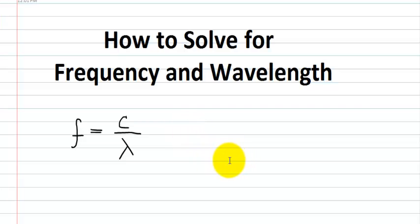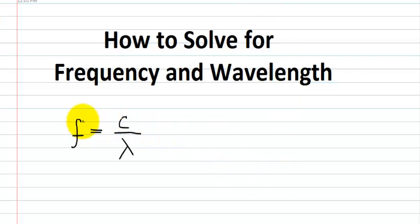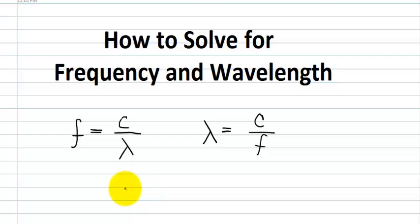All you really need to know is that the frequency is equal to the speed of light divided by the wavelength. You can manipulate that formula if you want to solve for the wavelength — lambda here stands for the wavelength. You just manipulate it, and it's nothing more than the speed of light divided by the frequency equals the wavelength. So you just swap them. Or if you wanted to confirm them, you just say that the speed of light is equal to the wavelength times the frequency.